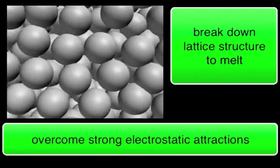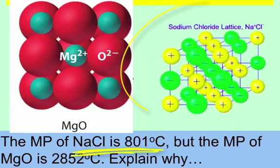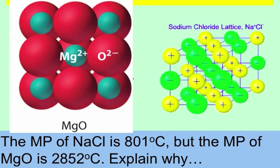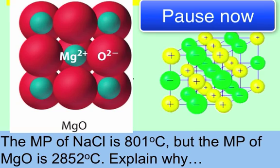So having a think about that, if I tell you that sodium chloride has a melting point of 801 degrees Celsius, but the melting point of magnesium oxide is nearly 3,000, 2,852 degrees Celsius. Can you think about a reason that could explain this?